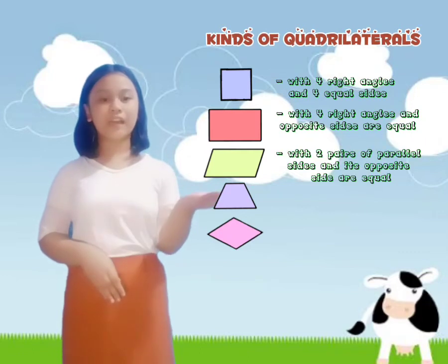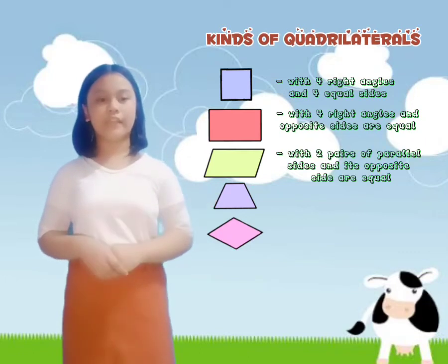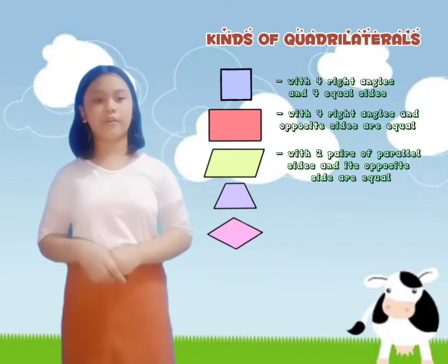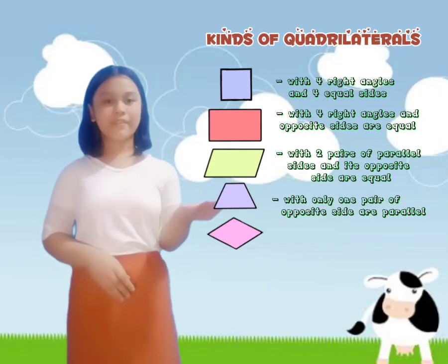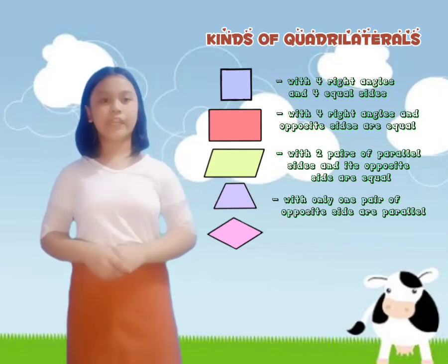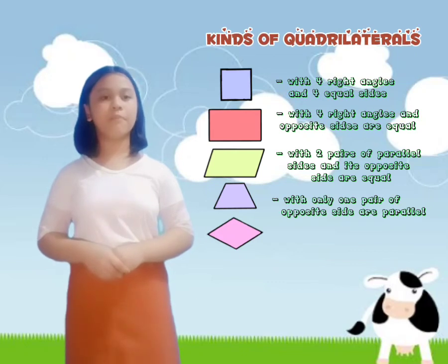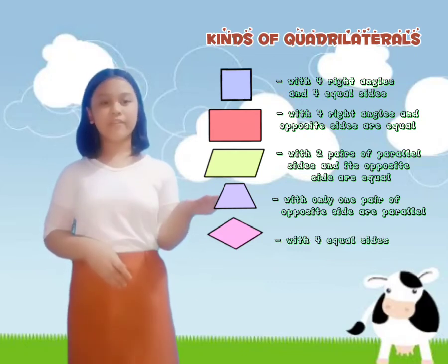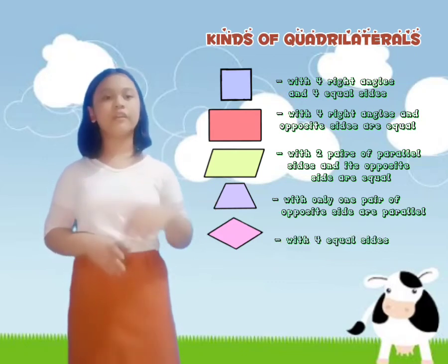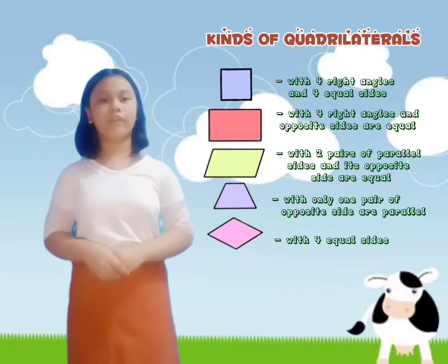A parallelogram is a quadrilateral with two pairs of parallel sides, and its opposite sides are equal. A trapezoid is a quadrilateral with only one pair of opposite sides that are parallel. A rhombus is a parallelogram with four equal sides.